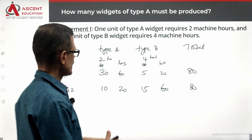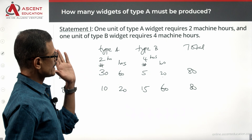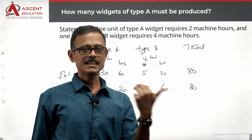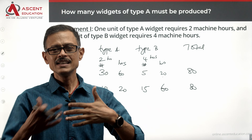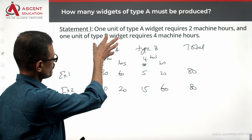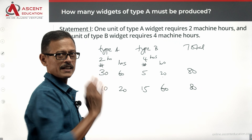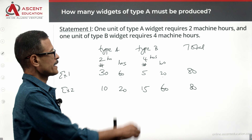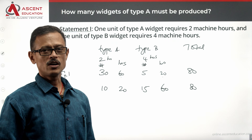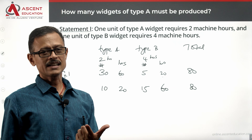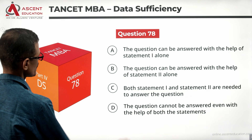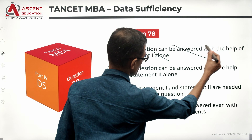So we do not get a unique answer from statement one alone. We only know it takes 2 hours and 4 hours per unit — we don't know the minimum or maximum to produce. For example, we could produce 40 of type A and zero of type B, or zero of type A and 20 of type B. Multiple combinations are possible, so statement one alone is not sufficient. We eliminate answer option A.